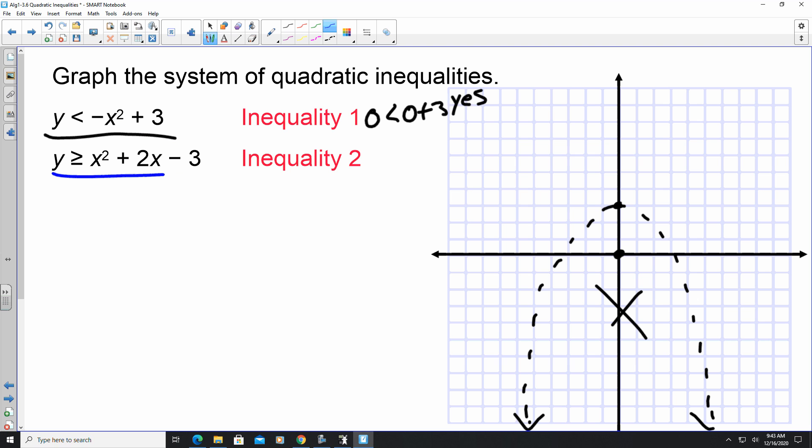So now I'm going to look at this inequality. This inequality has a being 1, b is 2, and c is negative 3. So my y-intercept is at 0, negative 3. My axis of symmetry is going to be x equals negative b, so it's negative 2 divided by 2 times 1. That's negative 1.